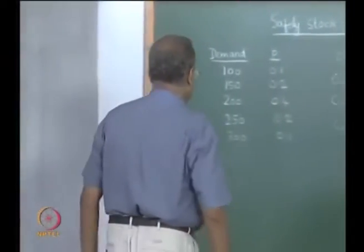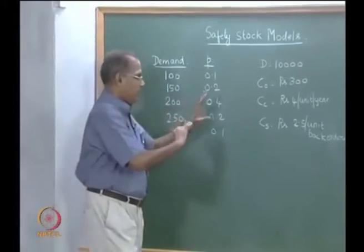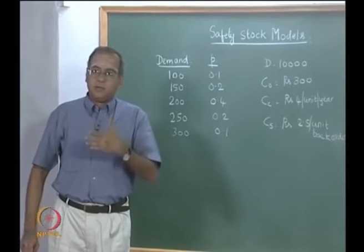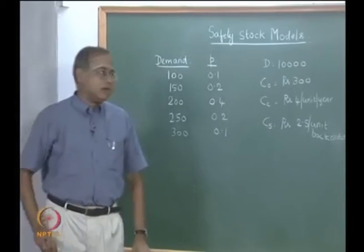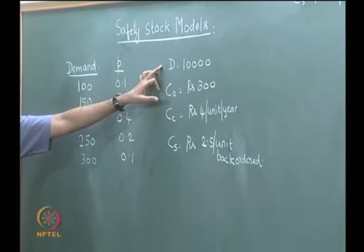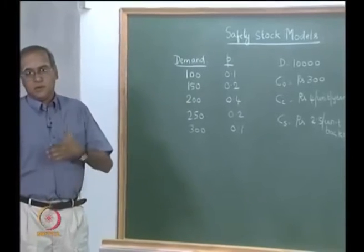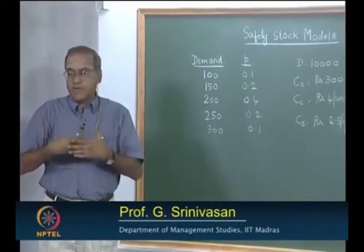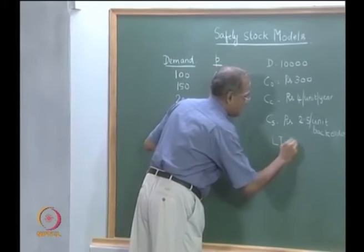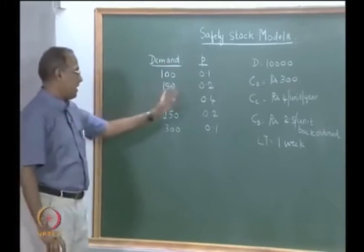In the previous lecture, we looked at probabilistic inventory models, where we took the same numerical illustration and spoke about the reorder level and the demand not being deterministic during the lead time. We took an example where the annual demand is 10,000 and if we assume 50 working weeks per year, the average weekly demand is 200, but it can vary. The lead time was one week, so the demand during the lead time followed a discrete distribution with an expected value of 200.